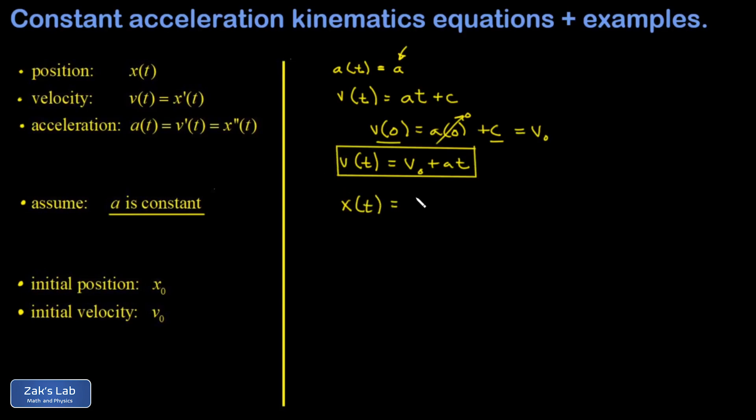And now I continue this process to find an expression for the position as a function of time. Well, if position is the thing you differentiate to get velocity, then it's the antiderivative of this velocity function. And again, I'll go through term by term guessing antiderivatives. v0 t is the thing you differentiate to get v0. And then using the power rule for antiderivatives, 1 half at squared is the thing you differentiate to get at. And to be as general as possible, we put in an arbitrary constant plus c.